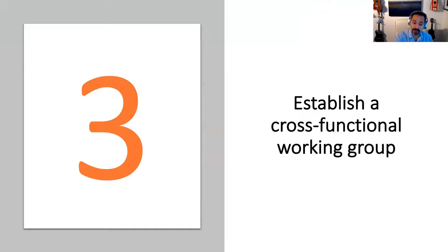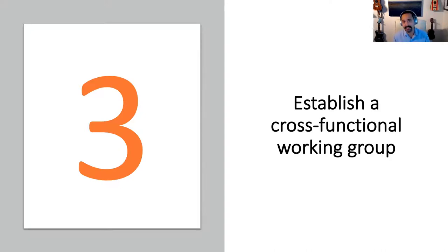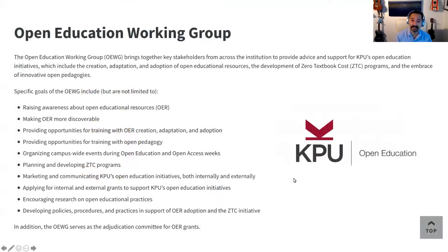Third, surround these key people with a cross-functional working group that includes representation from faculty, the student association, teaching and learning, the library, administration, and even other key stakeholders such as the bookstore. Lean on this working group to provide guidance and feedback as you design and execute your open education strategy. At KPU, we've published the mandate and terms of reference for our open education working group on our website, and I welcome you to draw on our work.